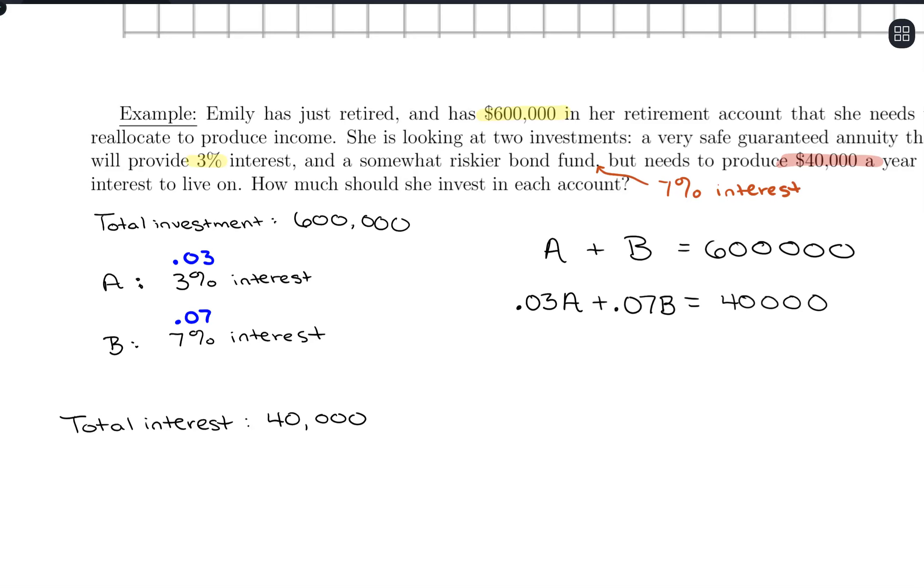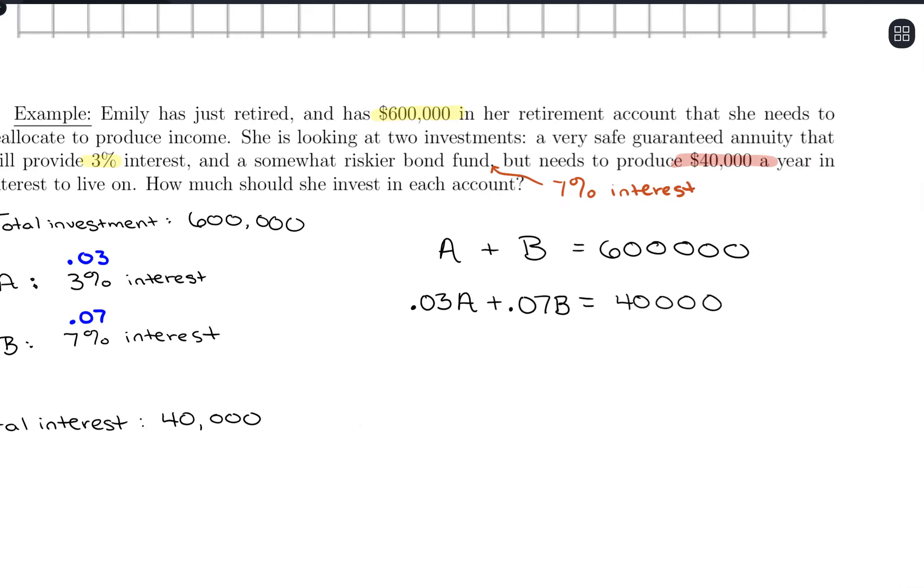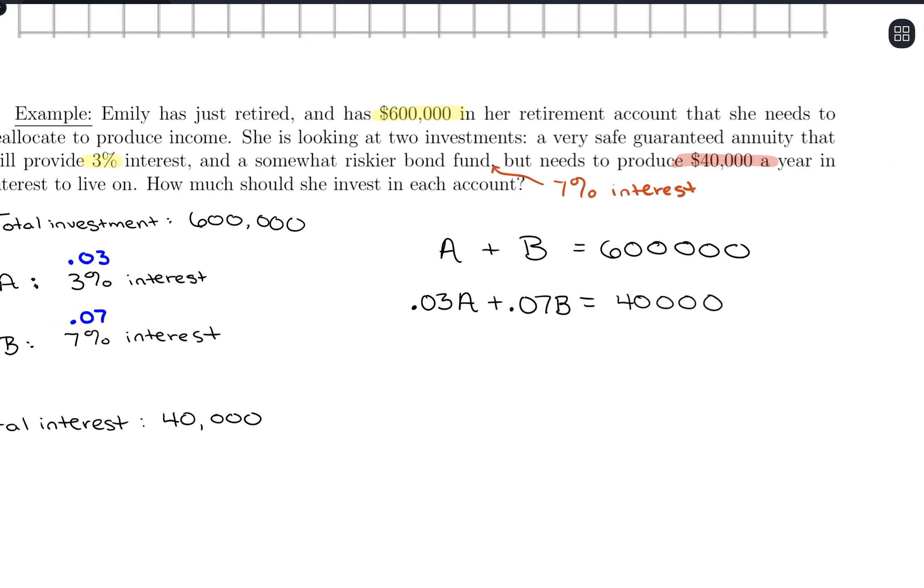Okay, so what we're going to do is solve the system of equations. Let's go ahead, and we can choose between elimination and substitution here. I'm going to go with substitution method, just because this first equation especially is set up nicely to solve for a single variable. So if I just take that and solve for A, I'm going to go ahead and say A is equal to $600,000 minus B. And what I'm going to do is take that and substitute it into the second equation. So we're going to have 0.03 times 600,000 minus B, plus 0.07B equals 40,000.